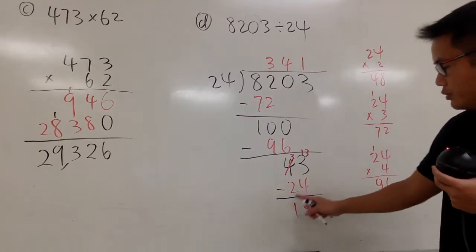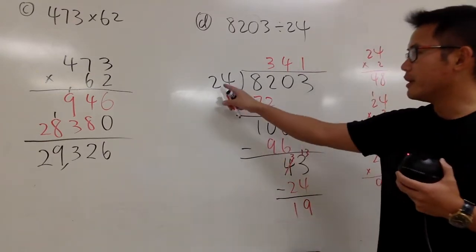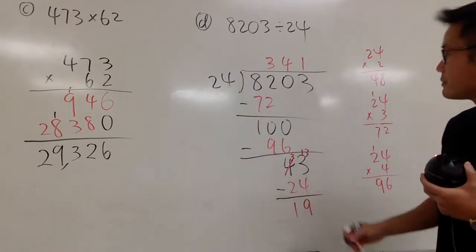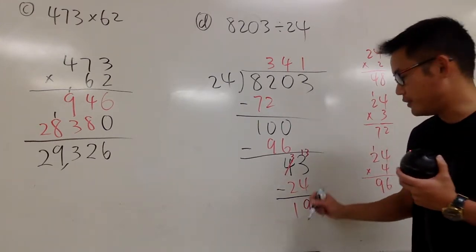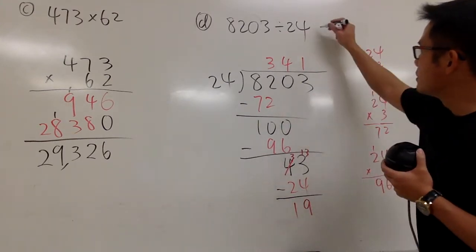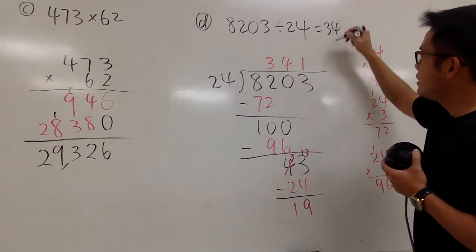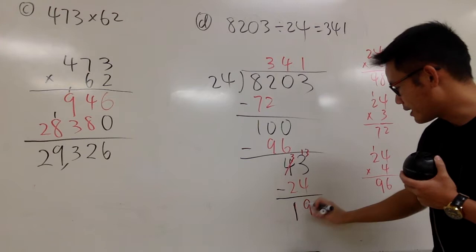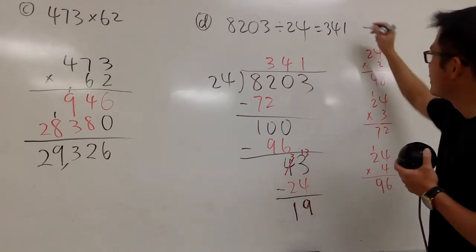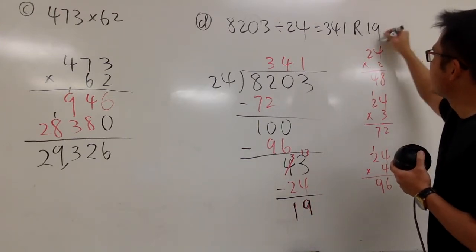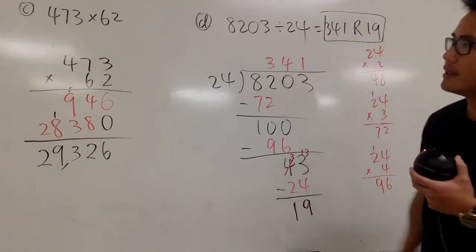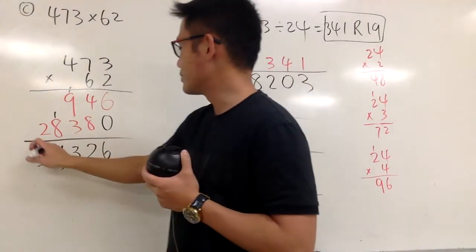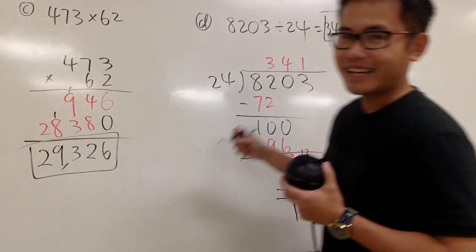And you just have to be sure the remainder is smaller than this number. And we are done. And this is how you write down the answer for division. You write down the answer as: 341 with the remainder 19. So put R 19, like this. And earlier, this answer was right here. So yeah, that's it.